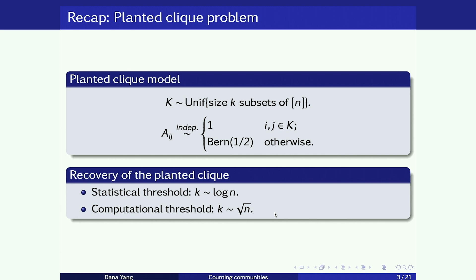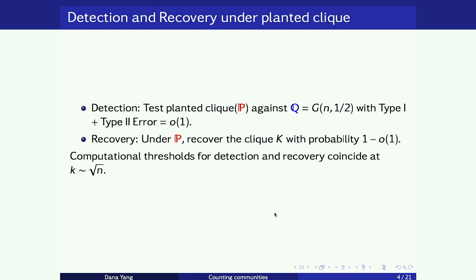When K is much smaller compared to root N, possibly up to polylogarithmic factors, it is conjectured that there are no polynomial time algorithms that can achieve recovery consistently.